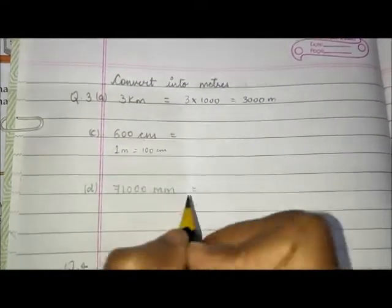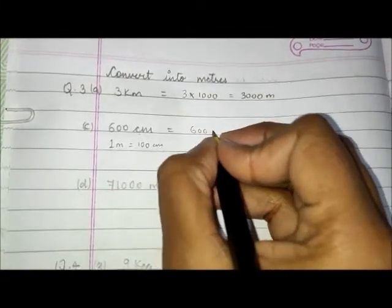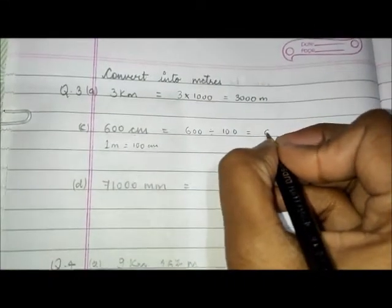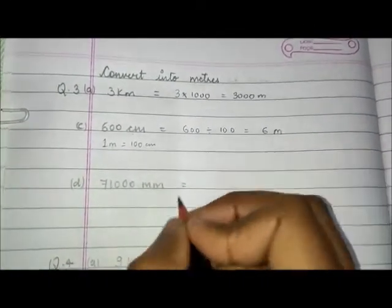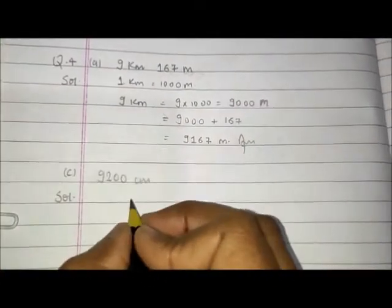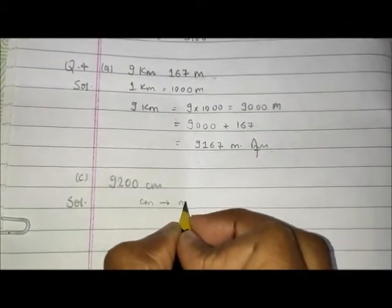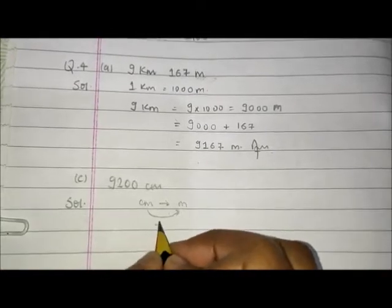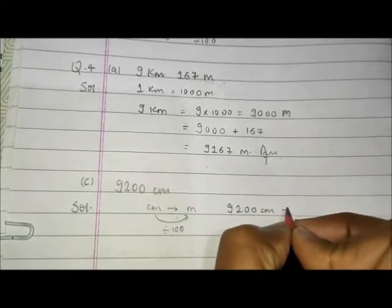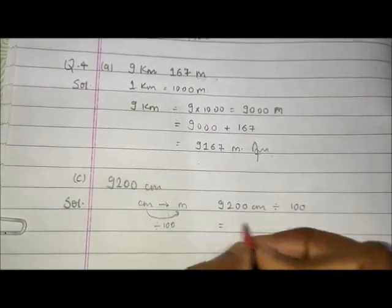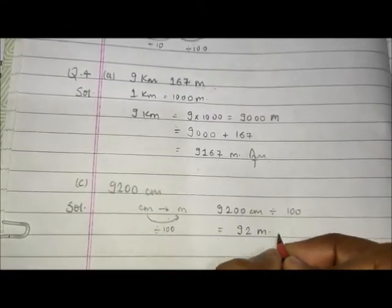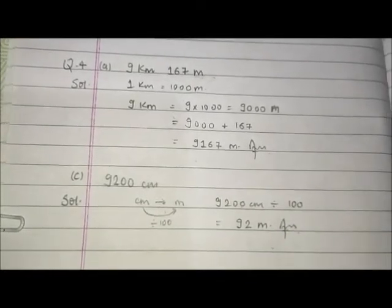When we convert smaller to bigger, we divide. So we divide 600 cm by 100 and we get 6. So 6 meters is the answer for 600 cm. Next is 9200 cm. We change centimeters into meters by dividing by 100. So 9200 cm divided by 100 gives us 92 meters. That is the answer.